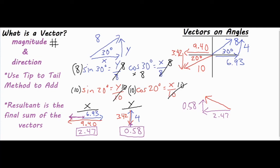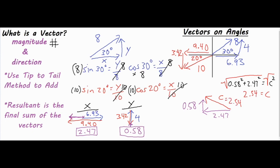The final answer is the hypotenuse of that right triangle. We apply the Pythagorean theorem again: a² + b² = c². We square both sides, add them, and take the square root to get our answer of 2.54. That gives us the final magnitude of our resultant vector.